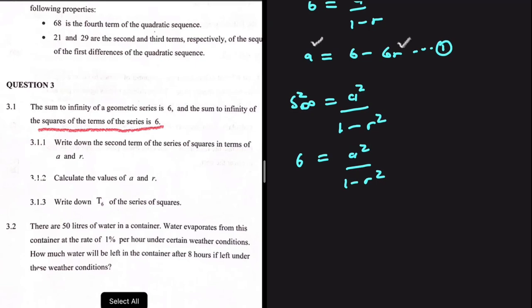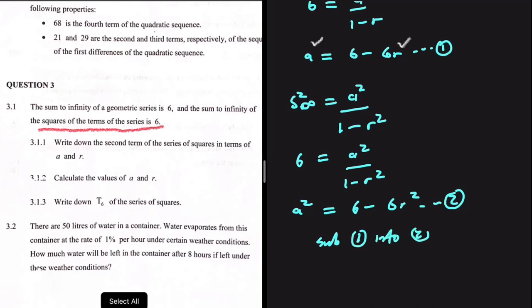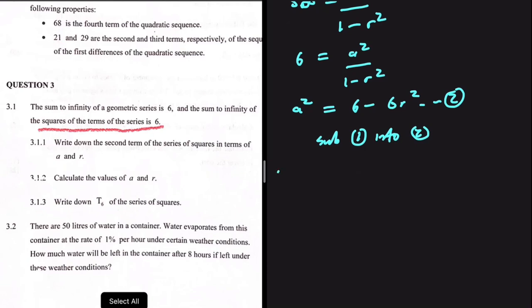We know that sum equals 6, so 6 equals A squared divided by 1 minus R squared. Cross multiplying gives A squared equals 6 minus 6R squared — this is equation 2. We substitute equation 1 into equation 2, replacing A with 6 minus 6R, giving 6 minus 6R, all squared, equals 6 minus 6R squared.